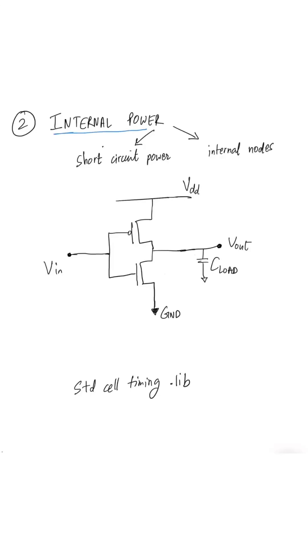Second type of power is the internal power, which consists of two components: short circuit power. Now when V_in is going from 0 to 1, there is a small amount of time when it is transitioning from 0 to 1. During a fraction of this time, both NMOS as well as PMOS are on, which creates a path from V_DD to ground which is undesired and results in short circuit power.